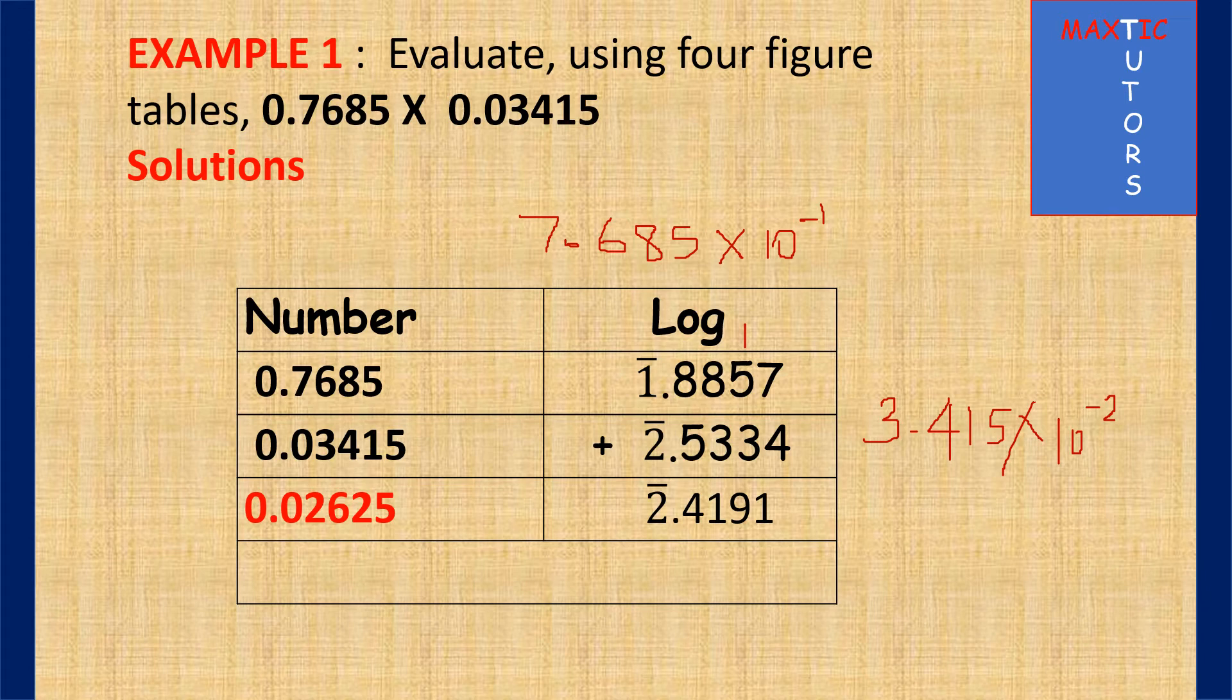8 plus 3 is 11, you write 1, carry 1. 1 plus 8 is 9, 9 plus 5 is 14, you write 4, carry 1. Then 1 minus 1 is 0, then 0 plus minus 2. Because 0 minus 2 is minus 2, so you have bar 2 here.